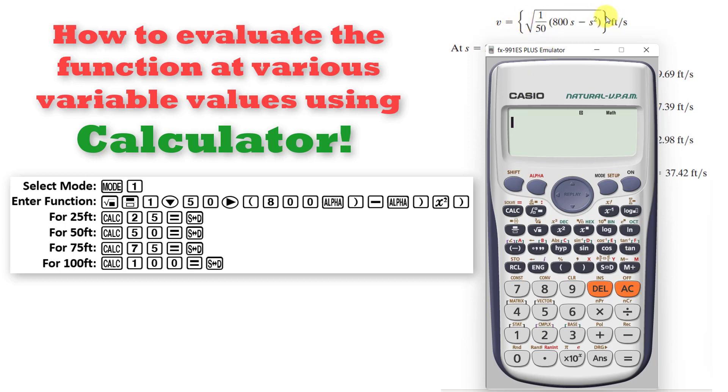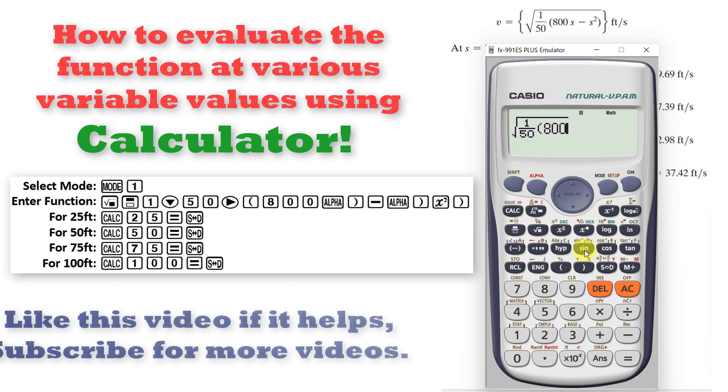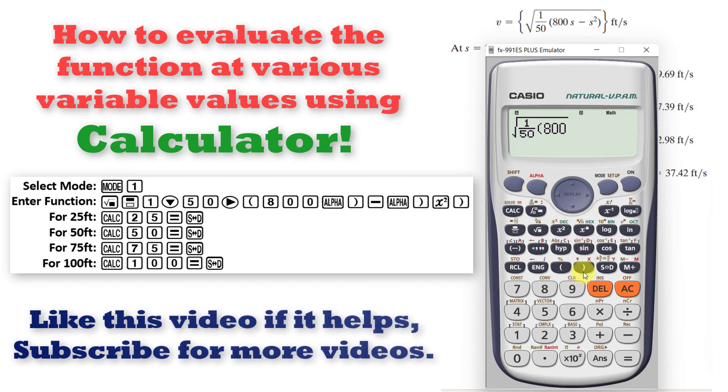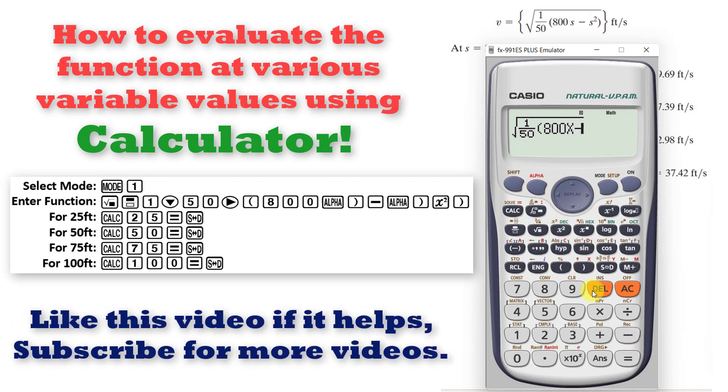After that we have to enter this function of velocity. So that will be square root and 1 divided by 50, brackets 800. Instead of s we will use the x variable. So alpha and this x minus alpha x square.